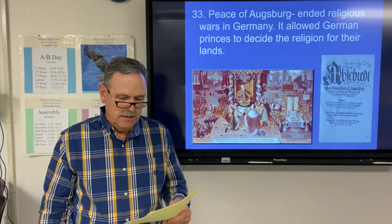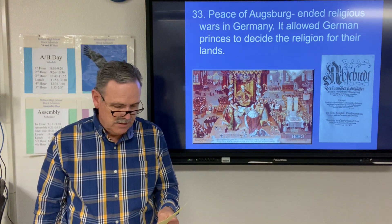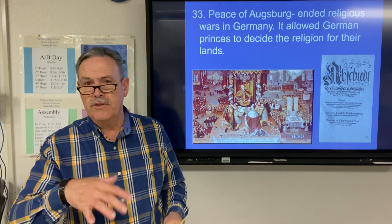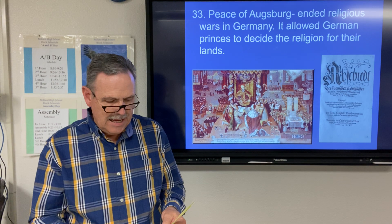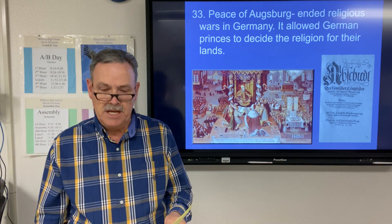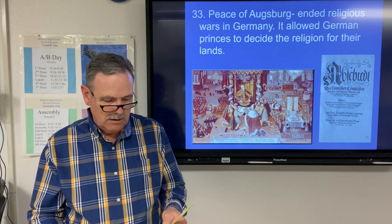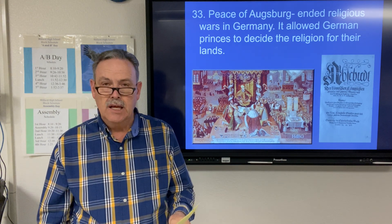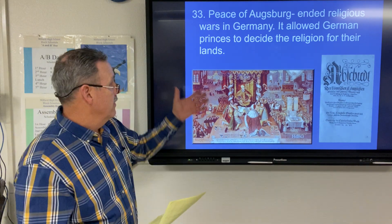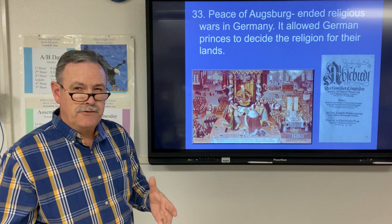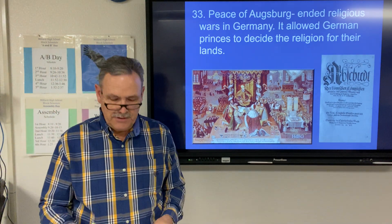The Peace of Augsburg ended the religious wars in Germany and allowed German princes to decide the religion for their own land. Between Ferdinand, the future Holy Roman Emperor acting for his brother Emperor Charles V, followers were to adhere to the denomination of their ruling prince. So it gave them a little more freedom, but they still had to follow the religion of that prince.